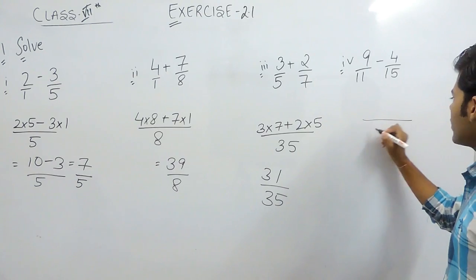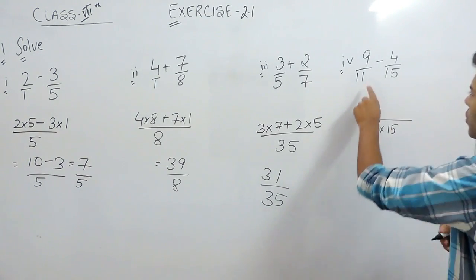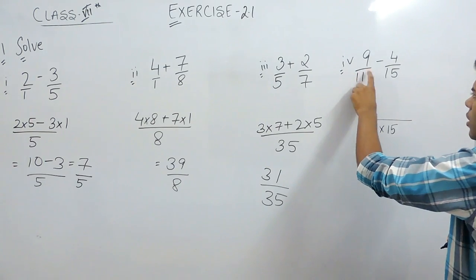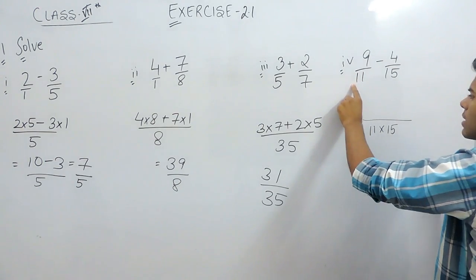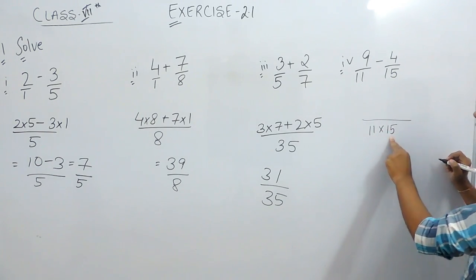And now for part D the LCM will be 11 multiplied with 15. Because you know that 11 is a prime number, it won't be having prime factors except for 1 and 11. So the LCM will be 11 into 15.